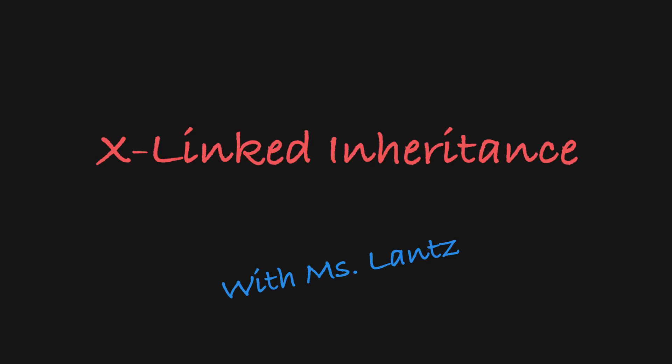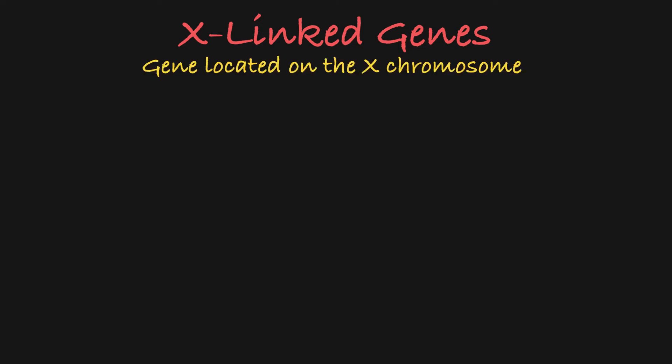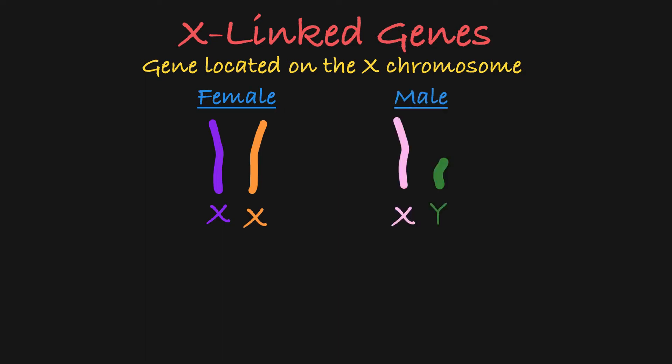In this video, I'll explain X-linked inheritance. An X-linked gene is a gene that is located on the X chromosome. In humans and fruit flies, female organisms typically have two X chromosomes in the genome, while male organisms typically have a single X chromosome paired with a Y chromosome.